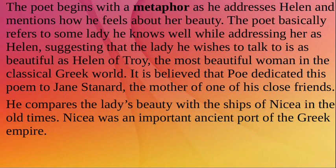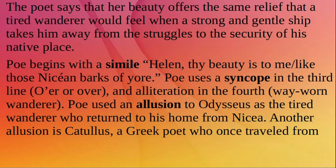The poet refers to a lady he knows well while addressing her as Helen, suggesting that the lady is as beautiful as Helen of Troy — the most beautiful woman in the classical Greek world. It is believed that Poe dedicated this poem to Jane Stanard, the mother of one of his close friends. He compares the lady's beauty with the ships of Nicaea in old times. Nicaea was an important ancient city of the Greek empire. The poet says that her beauty offers the same relief that a tired wanderer would feel when a strong and gentle ship takes him from struggle to the security of a native place.